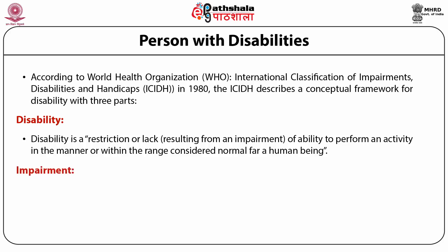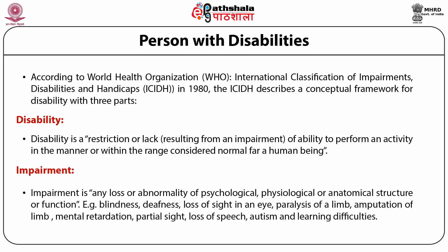Now, what is impairment? Impairment is any loss or abnormality of psychological, physiological or anatomical structure or function. For example: blindness, deafness, loss of sight in an eye, paralysis of a limb, amputation of limb, mental retardation, partial sight, loss of speech, autism and learning difficulties.